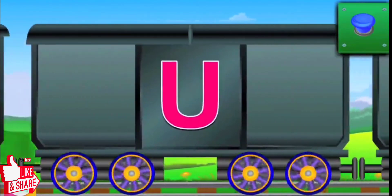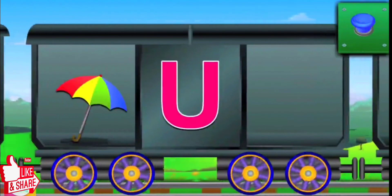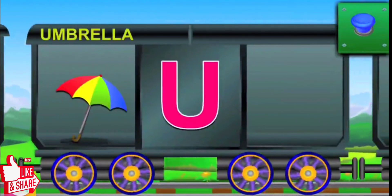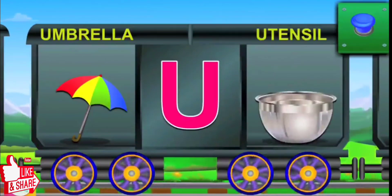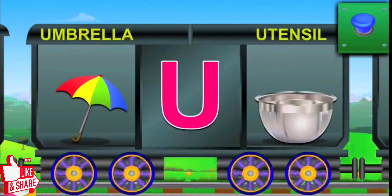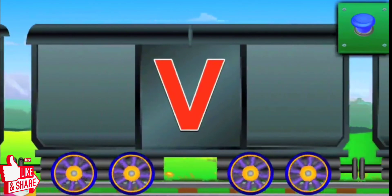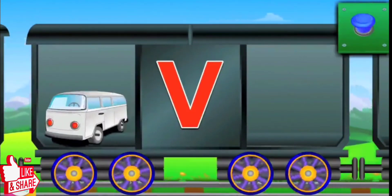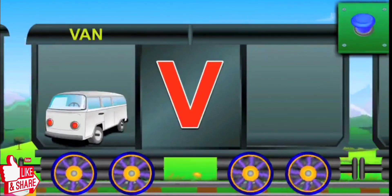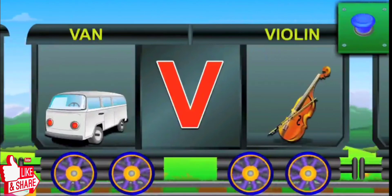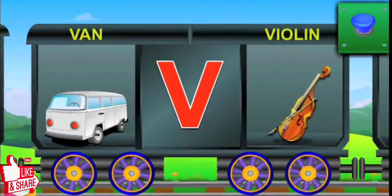Let's meet U. U for umbrella, and the umbrella is colorful. U for utensil, and the utensil is made of steel. Here is V. V for van, and the van is white. V for violin, and violin sounds great.